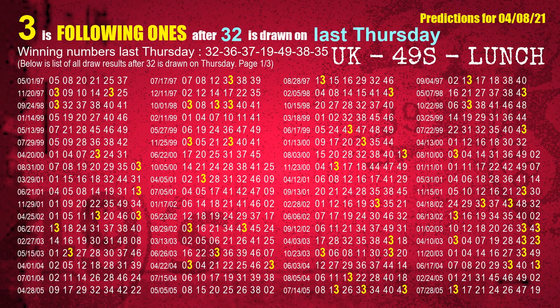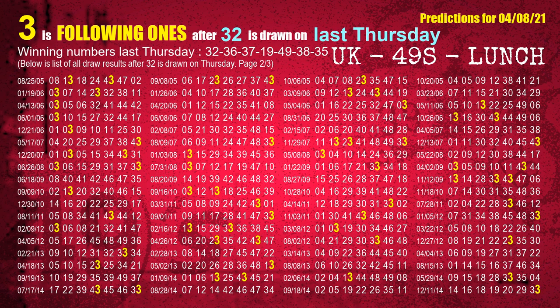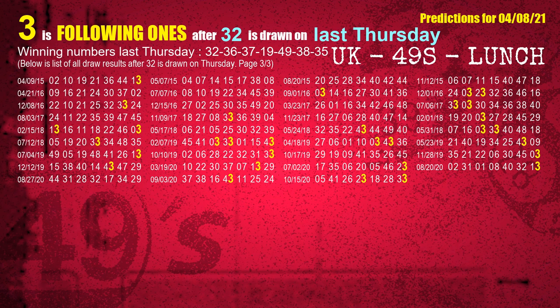The first winning number last Thursday is 32. We list all draw results which are one week after a Thursday draw with 32 as a winning number. The most frequently following units digit is 3 when 32 is the winning number on last Thursday. We highlight the units digit 3 in yellow for you.